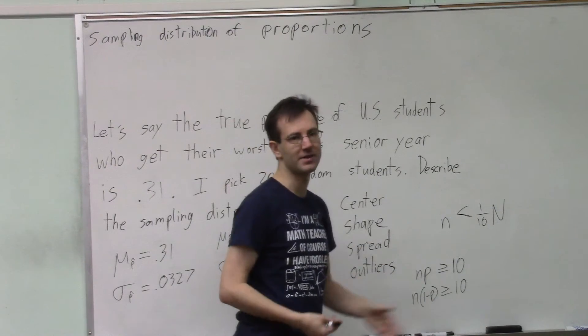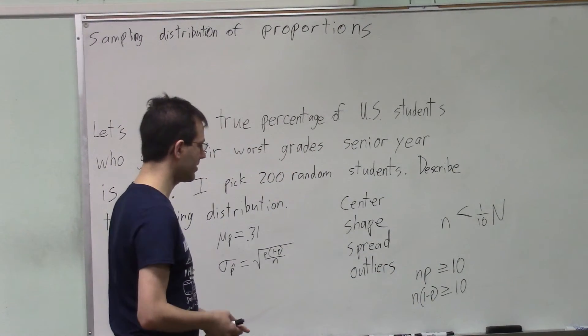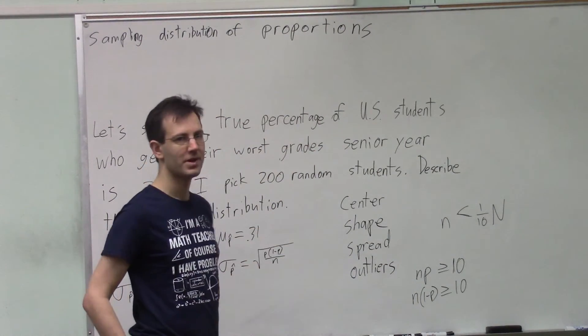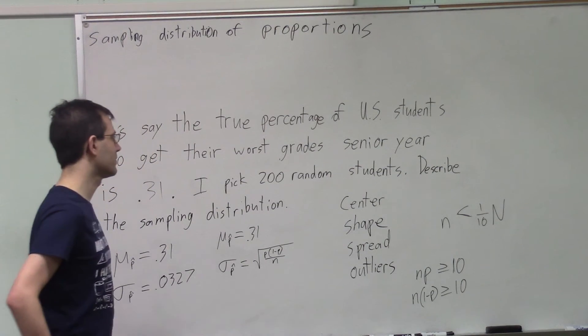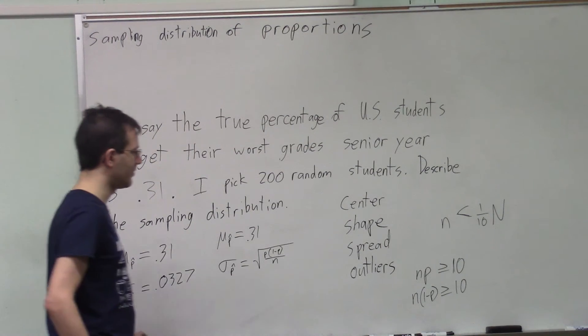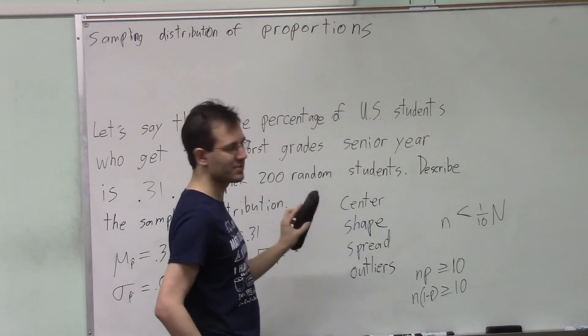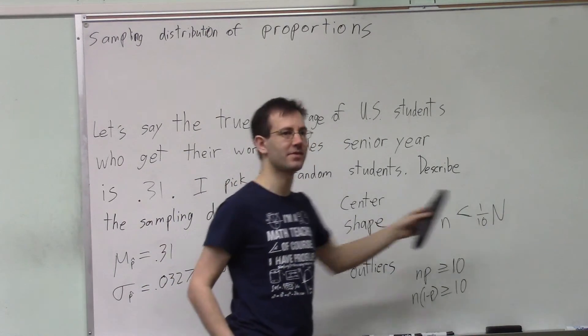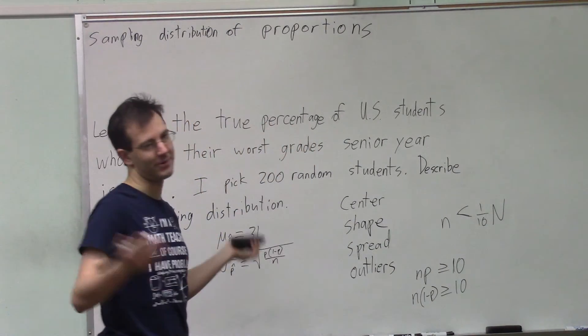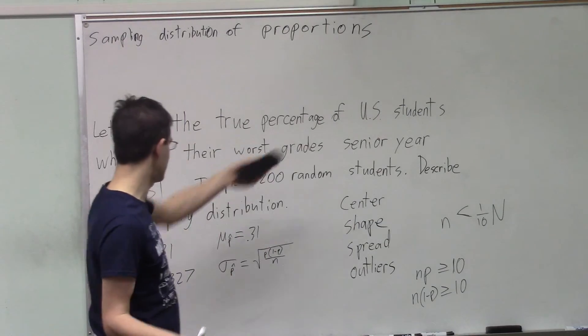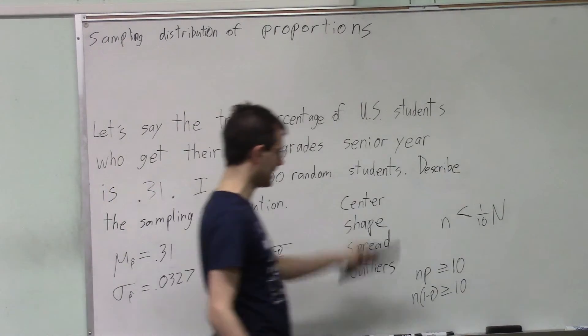So basically, these are the three conditions you're going to check before you can describe the shape of the distribution. You will say, first of all, are those students really independent of each other? Well, have we picked less than 10% of the whole population? Well, I figure there's more than 2,000 students in the U.S. So yup, that is taken care of.